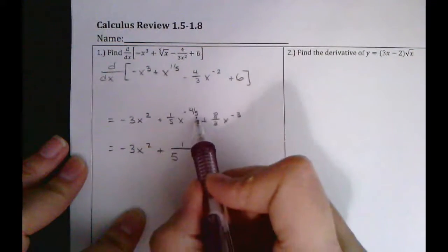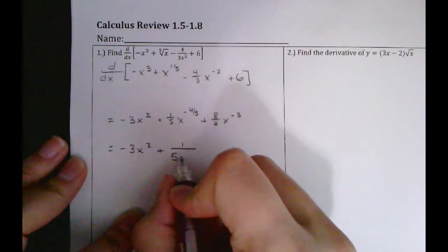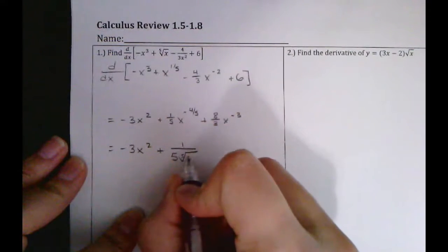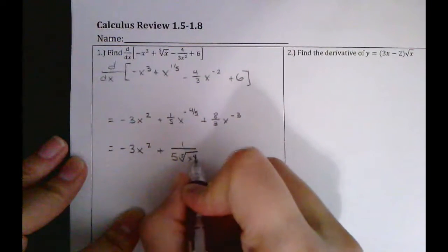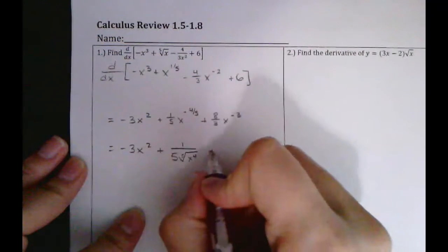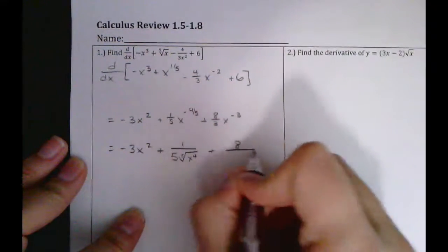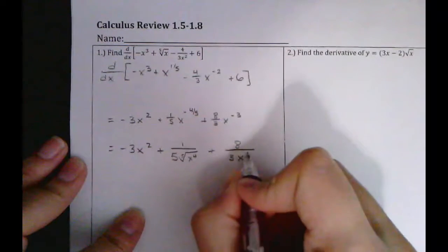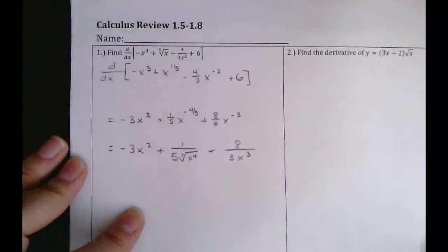So this as a radical is going to be the fifth root of x to the fourth, and this is just going to be over three x cubed.